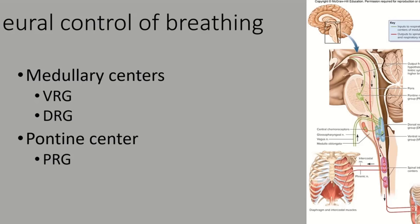The DRG, or dorsal respiratory group, modifies the rate set by the VRG. It essentially tells the VRG to speed up — to depolarize more quickly — or to slow down. Think of the VRG as the autopilot, and the DRG as the backseat driver saying 'speed up, you're not going fast enough' or 'slow down, you're going too fast.'